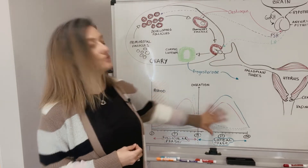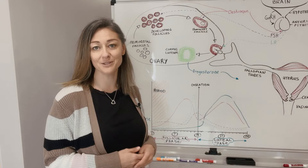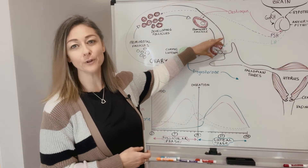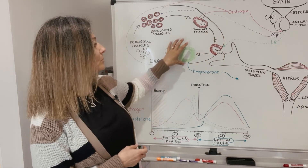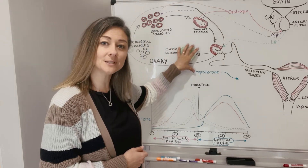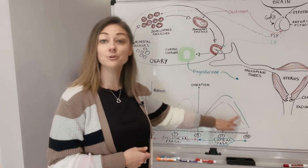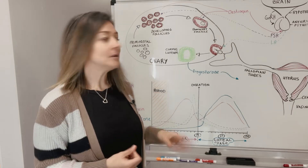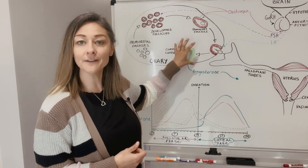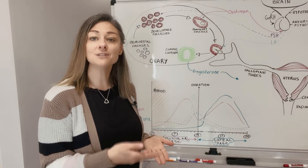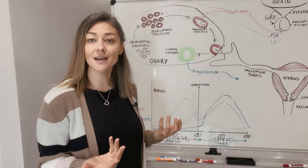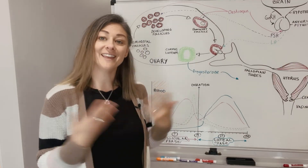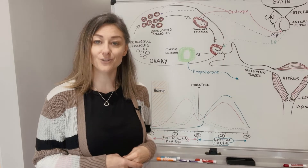After ovulation you move into the luteal phase, the second phase of your menstrual cycle. The remaining follicle turns into what is called the corpus luteum, which goes on to produce estrogen and progesterone in the second half of your cycle. If pregnancy doesn't happen, the corpus luteum has a lifespan of around 14 days. After these 14 days, if no pregnancy has occurred, the corpus luteum shuts down, estrogen and progesterone levels decline, your uterine lining sheds, and you see your period.